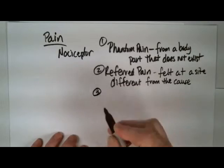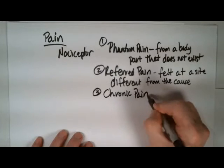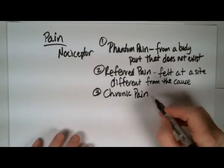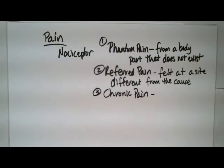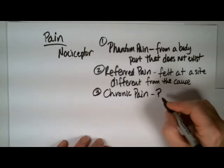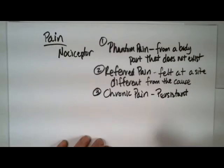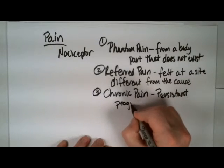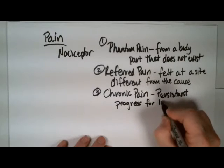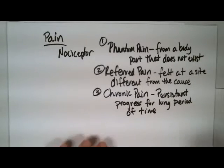The third type is chronic pain. Chronic pain is pain that's persistent and progresses or stays with you over a long period of time — like a bruise that keeps going. When you go to see the doctor and say something hurts, they may ask how long this has been going on to determine whether this pain is chronic.